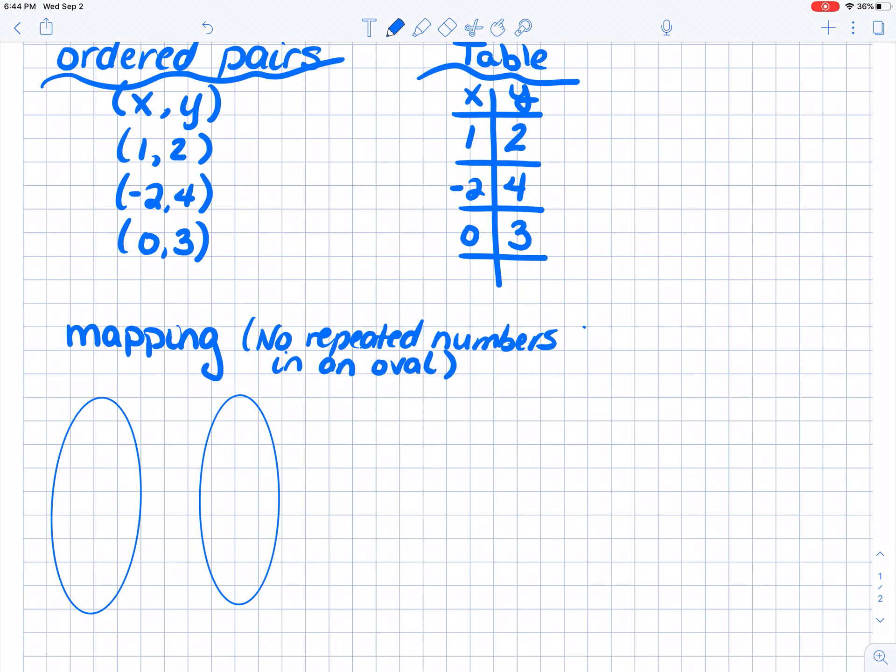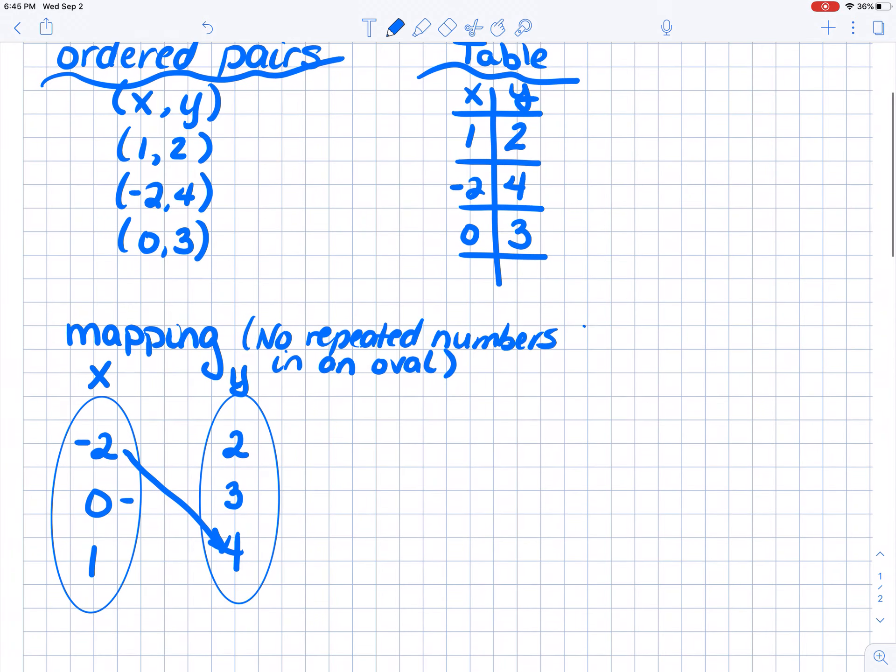So this is going to be my X values, my inputs. And the next one is going to be my Y or my outputs. My smallest X is negative 2, the next one is 0 and then 1. I'm going to do the same thing with my Y values. 2 is my smallest, then 3, then 4. Now here's the part a lot of people forget to do. This is not a mapping until you connect the pairs. Negative 2 connects to 4, 0 connects to 3, and 1 connects to 2. That's how we do a mapping.